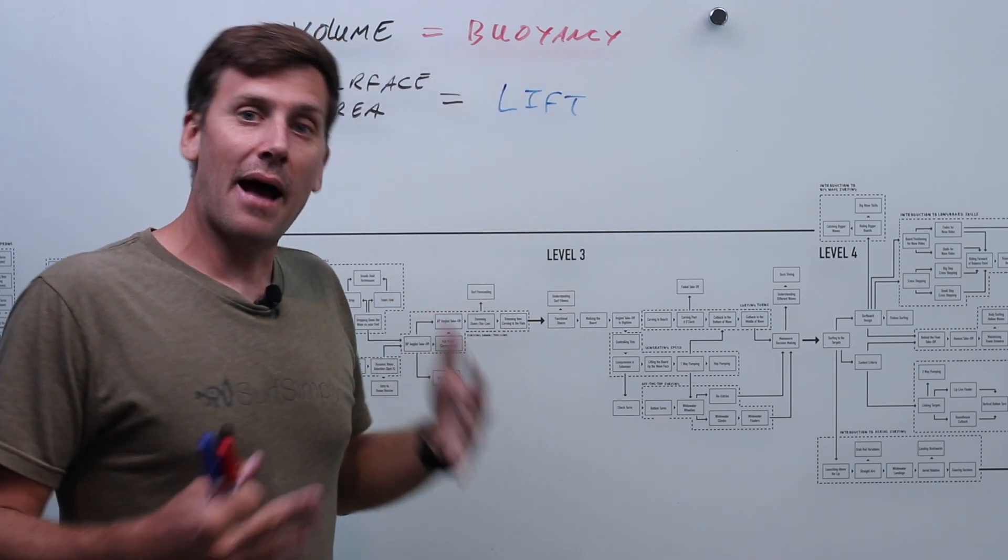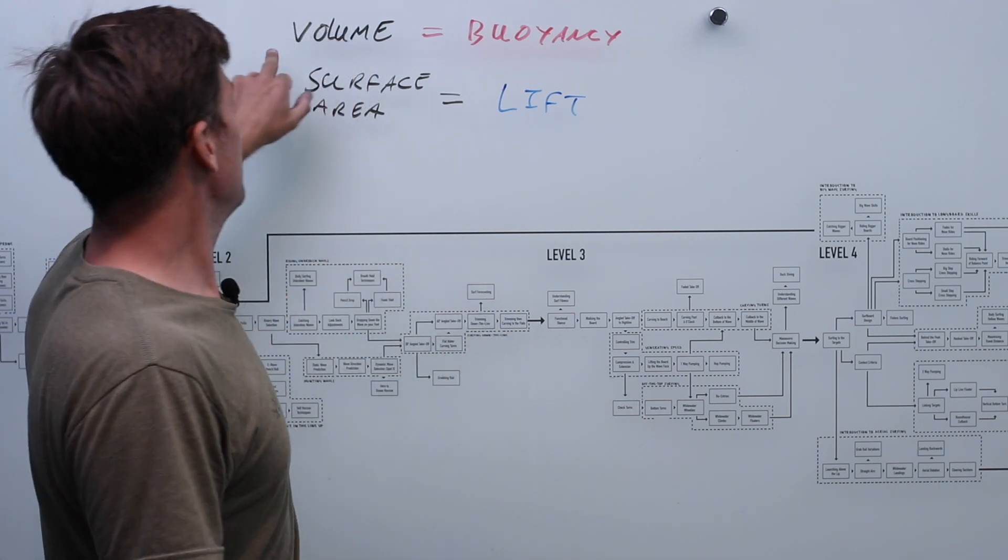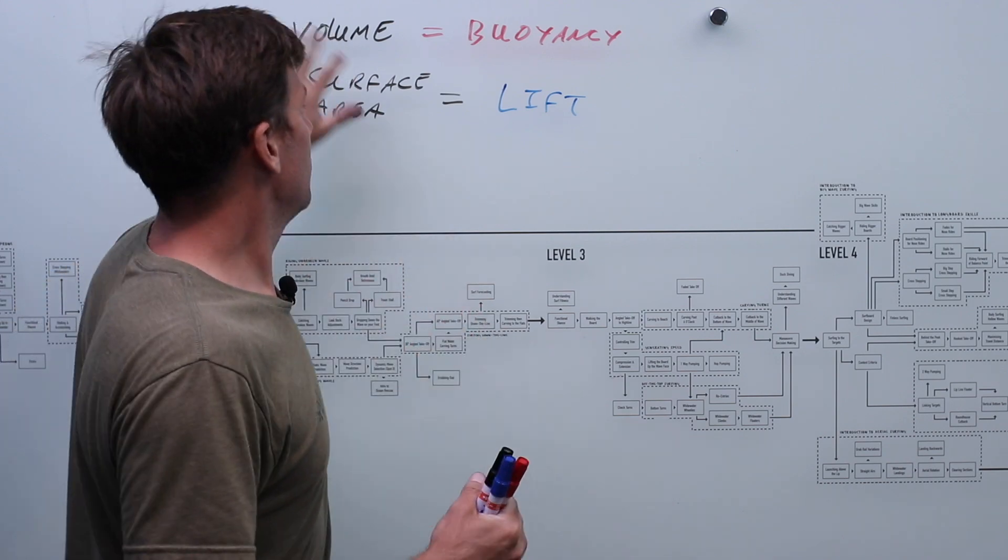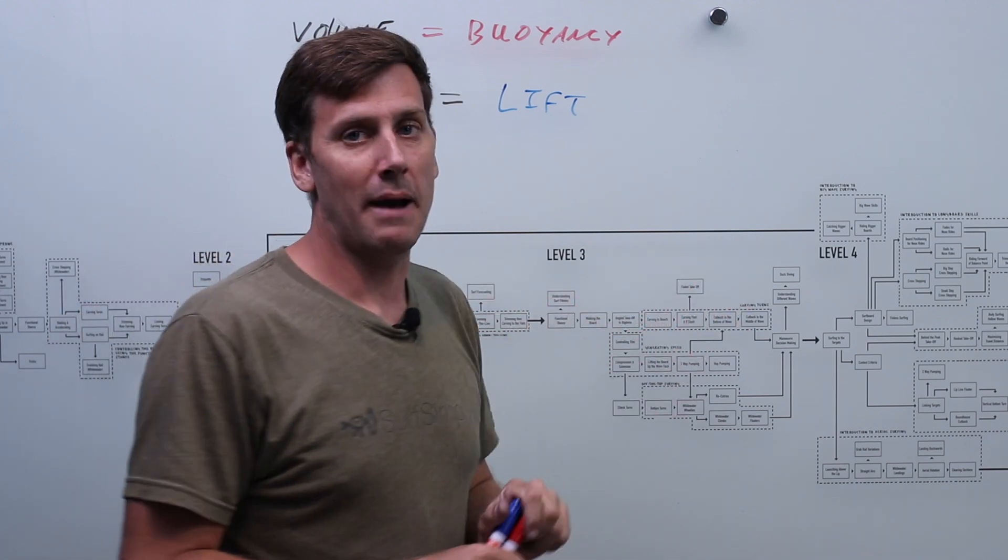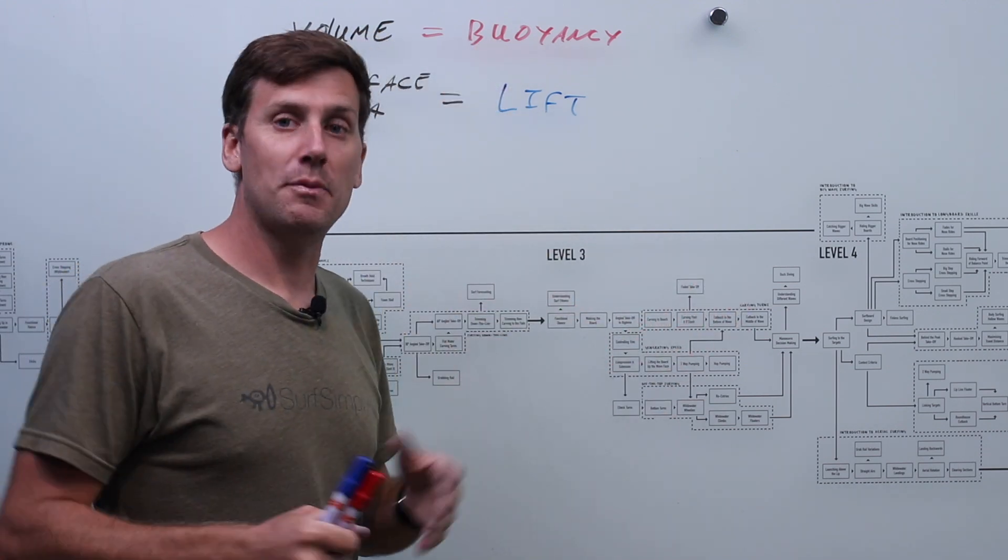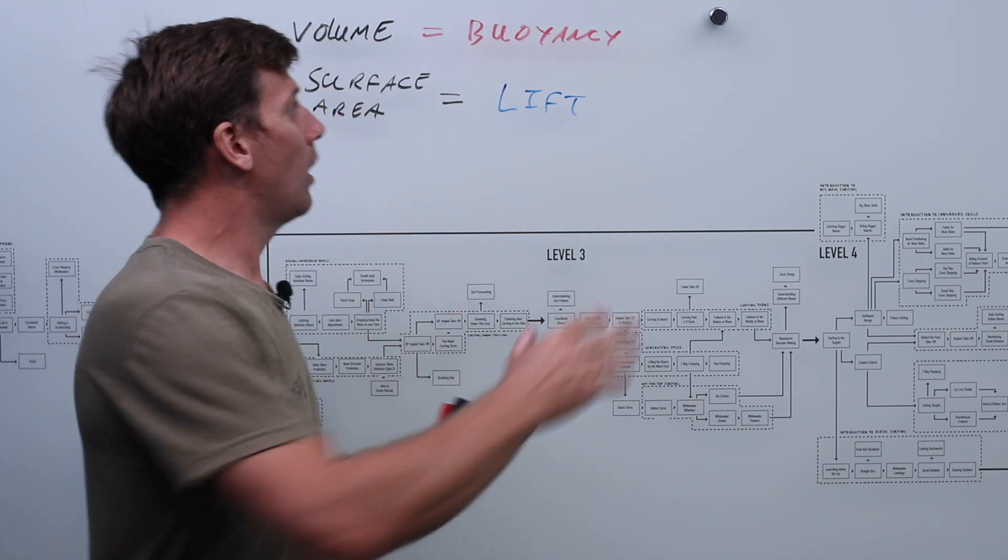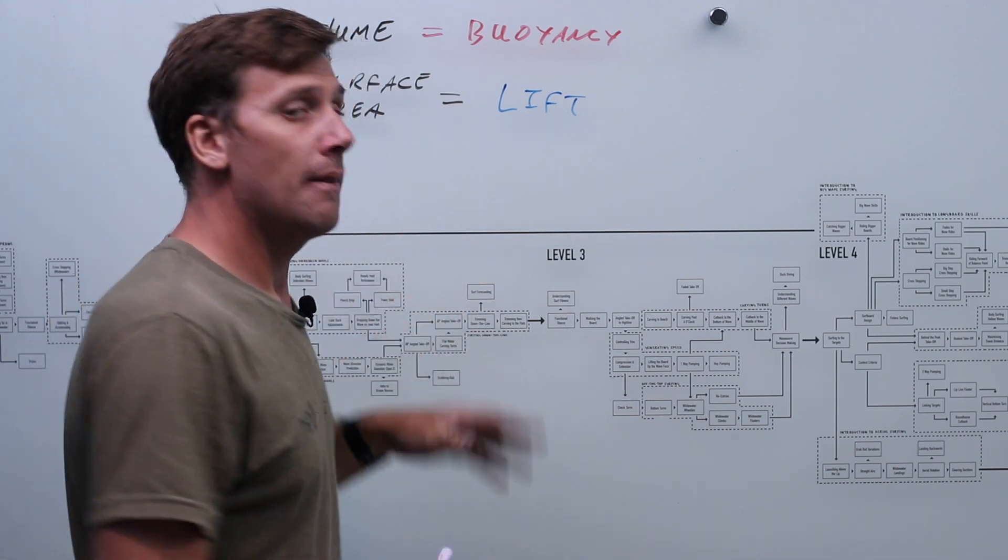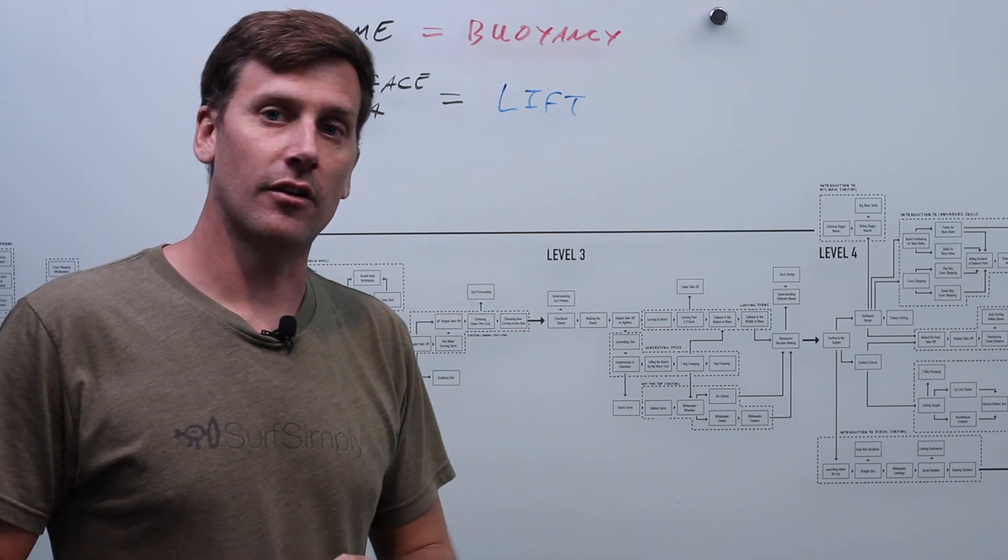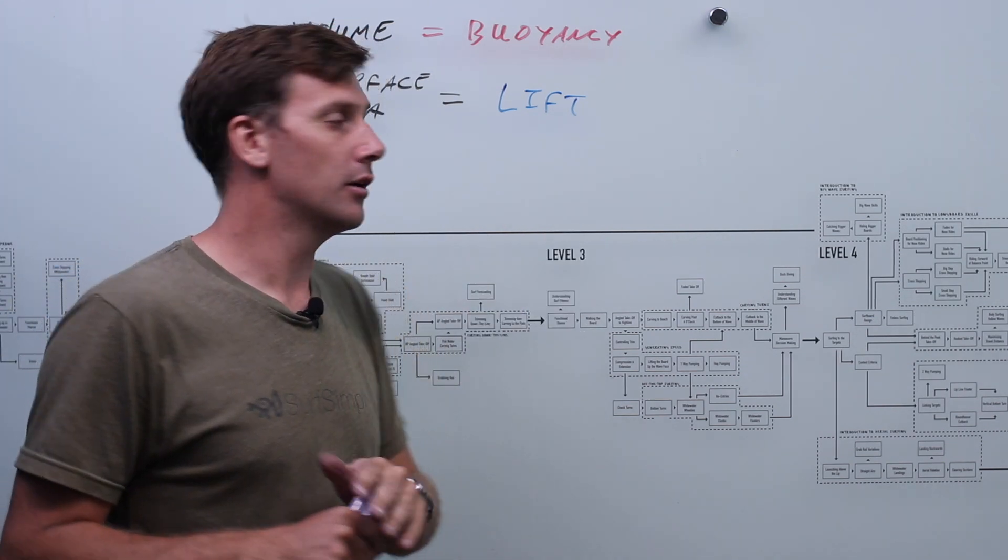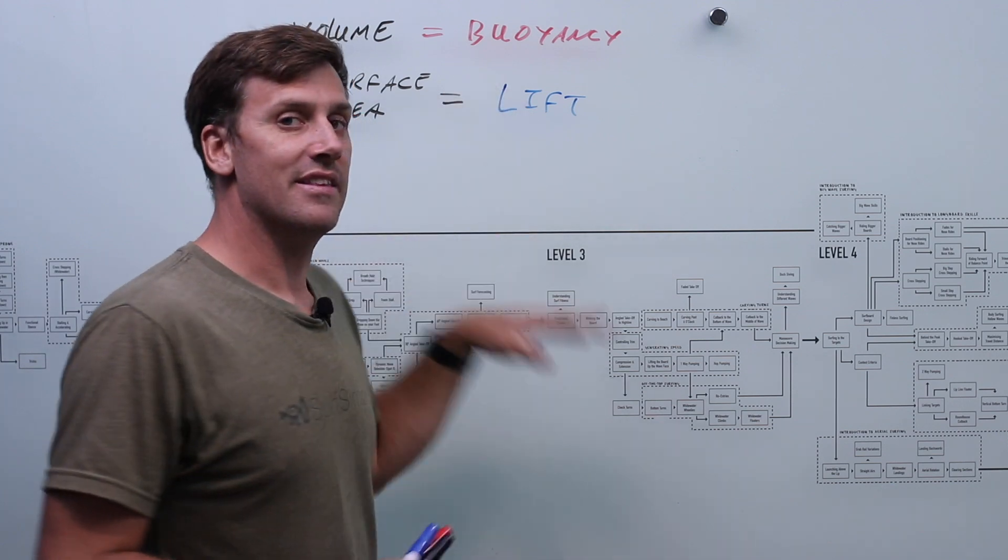When we're down and paddling on the board, we're relying on the boards in what's called displacement mode. Okay. We're using the volume, the displacement of the board to create buoyancy, to support our weight. And we're pushing water aside as we paddle. Now in this mode, there's actually a limited top speed that you can do. Okay. The board will not go any faster whilst staying in displacement mode. So in order to go faster, we need to lift the board up out of the water and start skimming across the surface. Okay. What we call planing. Okay. Just like a speed boat. And to do that, we're using the surface area of the board to generate this lift.